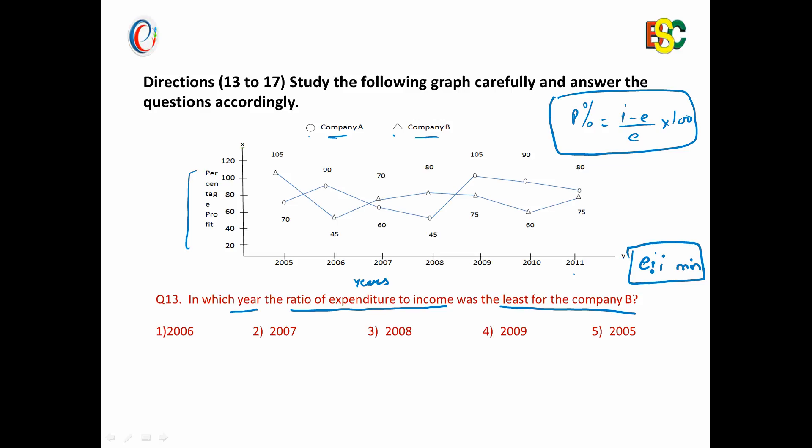But for this question you have to assume one thing and your answer will be gotten in few seconds only: assume E is equal to 100, or expenditure is equal to 100, for each year. Suppose for year 2005, if we take expenditure as 100, then income would be E plus P. Here we have given profit percentage for 2005 and company B as 105 percent. But as E is 100, then profit will be 105 only, then income would be 100 plus 105, that is 205. So here the ratio would be 100 upon 205.